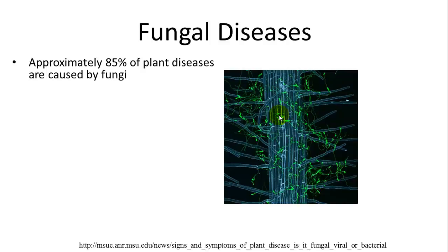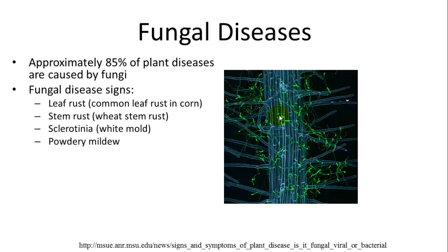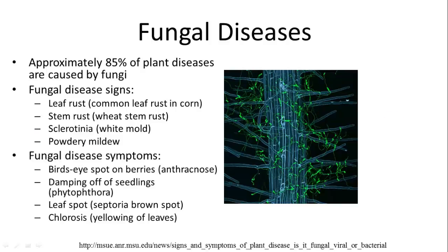85% of plant diseases are caused by fungi, so they generally have a parasitic relationship with plants. Fungal diseases that are common include leaf rust — rust is usually a reddish color — stem rust, for example wheat stem rust, sclerotinia which is a white mold, and powdery mildew which creates a powdery fuzz. Some symptoms from fungal diseases include spots on berries caused by anthracnose, dampening off of seedlings by Phytophthora, leaf spot by Septoria brown spot, and chlorosis — yellowing of leaves.